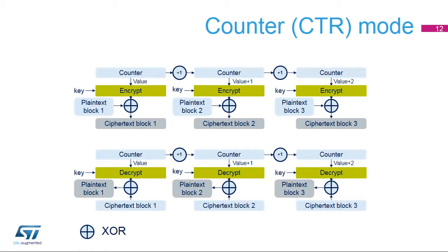The counter mode, known as CTR mode, uses the AES core to generate a key stream. The keys are then XORed with the plaintext to obtain the ciphertext. Unlike ECB and CBC modes, no key scheduling is required for the CTR decryption, since in this chaining scheme the AES core is always used in encryption mode for producing the key stream or counter blocks.